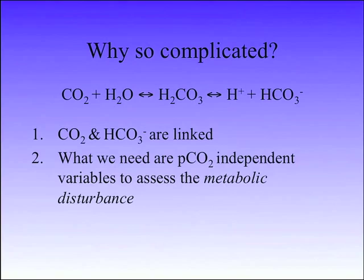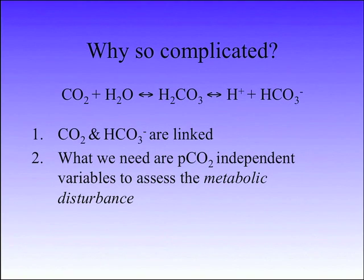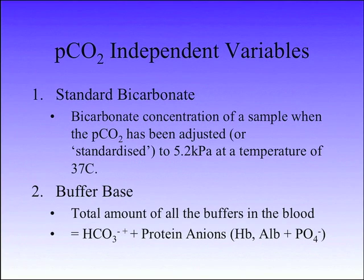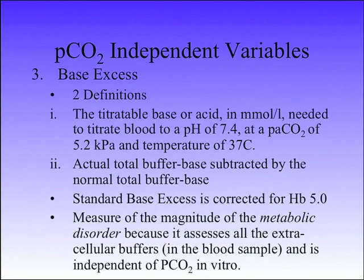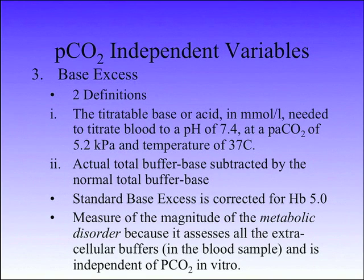Why is it so complicated? CO2 and bicarb are linked via the Henderson-Hasselbalch equation — if CO2 goes up, bicarb will have to go up because of the mass effect. What the Copenhagen group sought to do was come up with PCO2-independent variables to assess the metabolic part of the disturbance. They came up with things like standard bicarb, buffer base, and base excess — which we're all familiar with. The definition: the titratable base or acid in millimoles per litre needed to titrate blood to a pH of 7.4, a PCO2 of 5.2, and a temperature of 37.